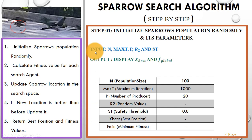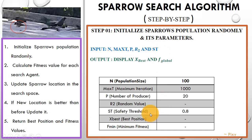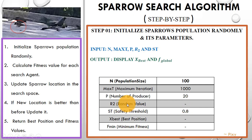The required parameters are: population size N, maximum iterations max_t, number of producers, alarm value R2, and safety threshold ST. Population size is 100, maximum iterations is 1000, number of producers is 20. The alarm value R2 is generated randomly using the rand function during execution, and ST is the safety threshold with a value of 0.8. This gives us the best position and minimum fitness value that we will return in the end.